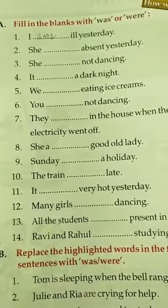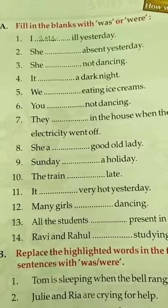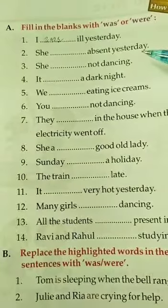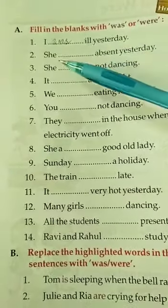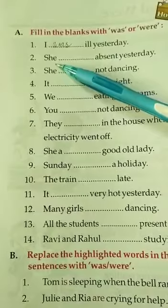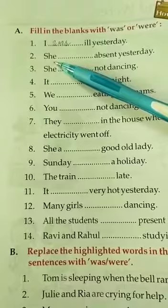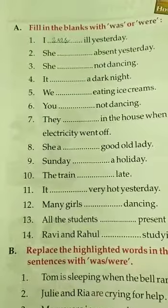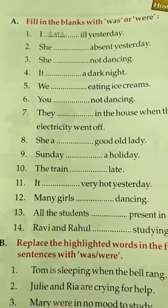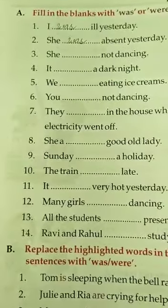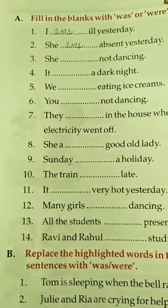Second question: 'She ___ absent yesterday.' Again 'yesterday' indicates past tense, so we will fill in 'was' or 'were'. The pronoun here is 'she', which refers to a single girl — it is a singular pronoun — so we use 'was' with it. Answer: She was absent yesterday. Similarly for the next part, 'she' is again given as a singular pronoun, so the answer is 'was' again.